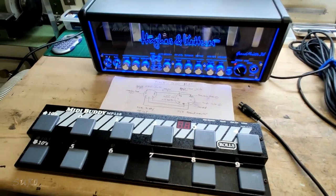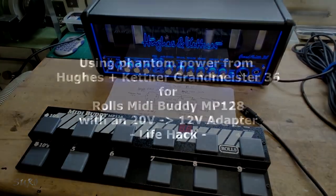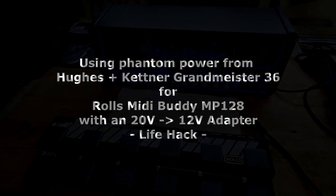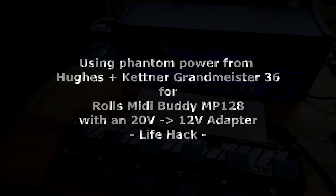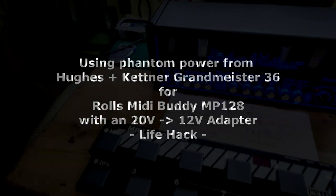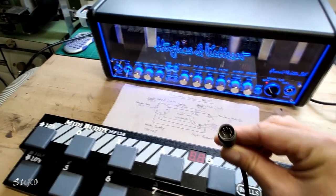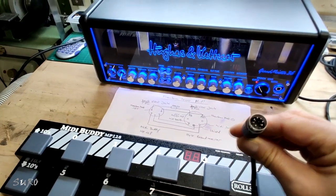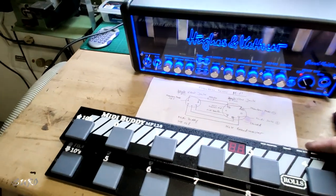Okay ladies and gentlemen, today we're going to show you a possibility how to connect, for example, a Hughes + Kettner Grandmeister 36 with a 7-pin MIDI connector jack or cable with a 5-pin connector.